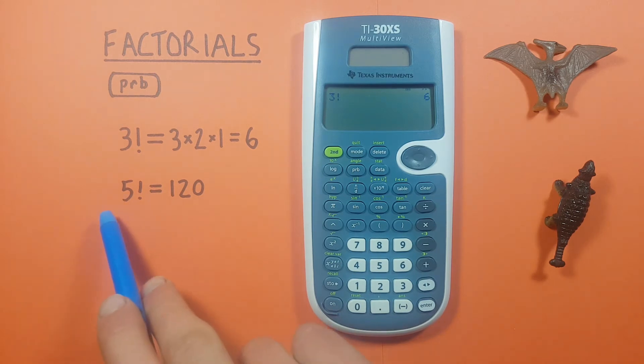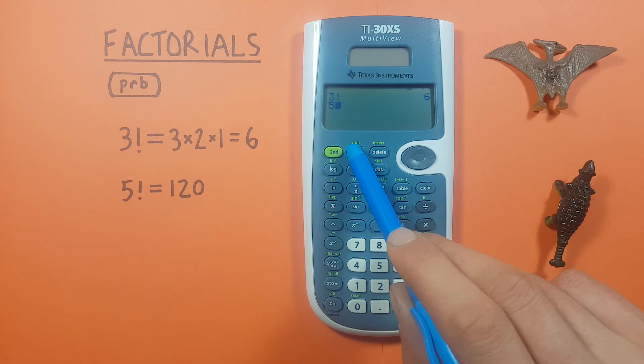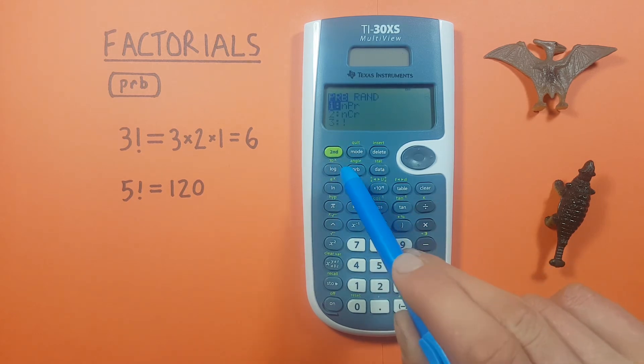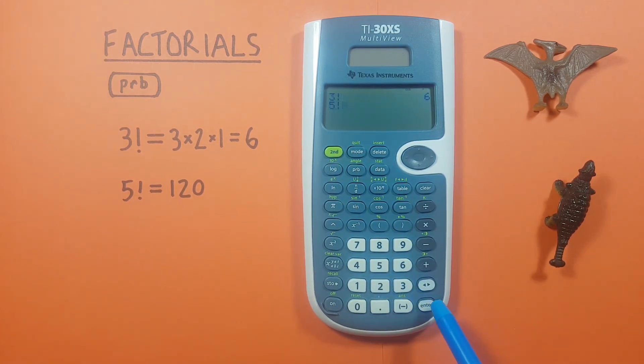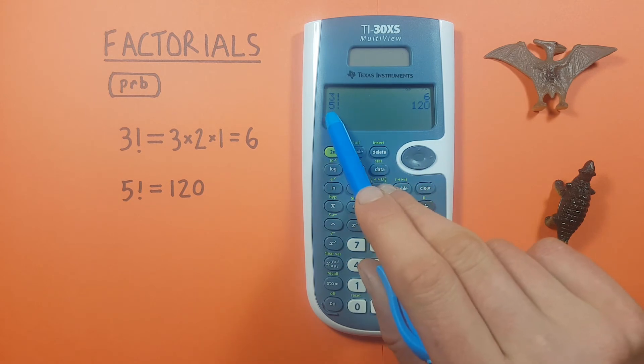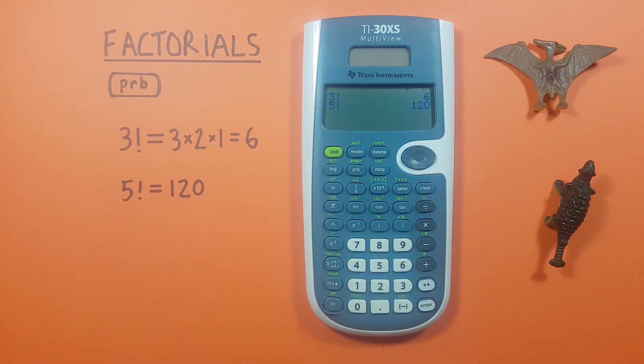Again we can do 5 factorial same way 5 PRB 3 enter gives us 5 factorial is equal to 120.